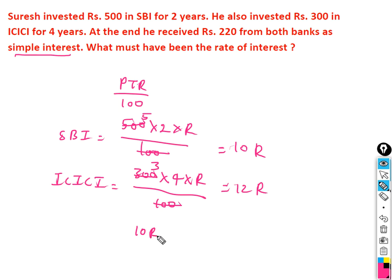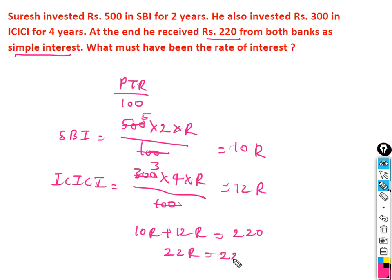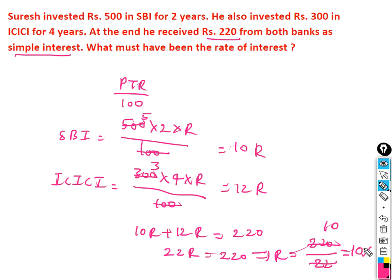So 10R plus 12R equals 220. That gives us 22R equal to 220. Dividing 220 by 22 gives 10. So the rate of interest is 10 percent. Answer: 10 percent.